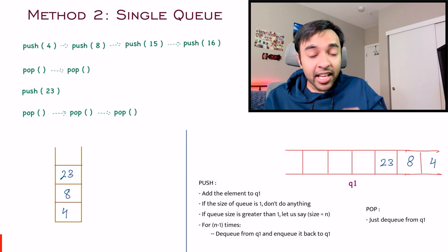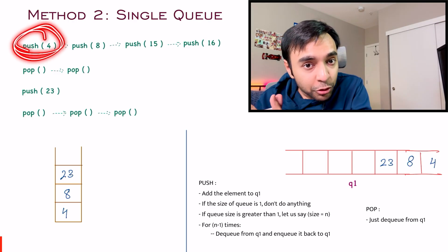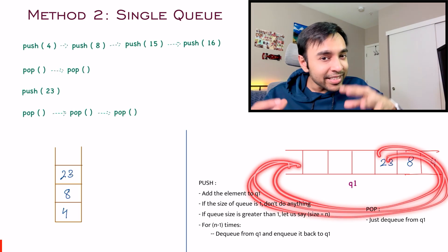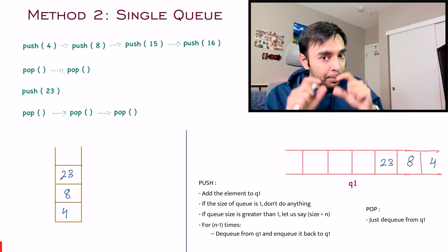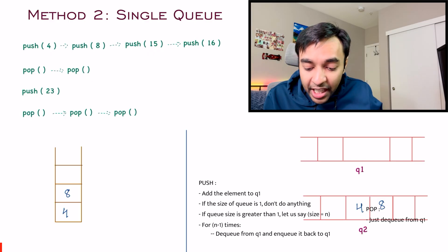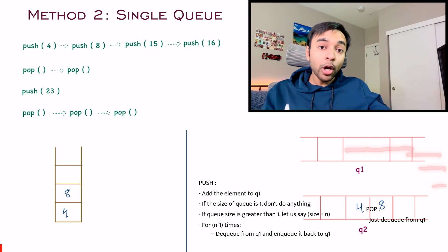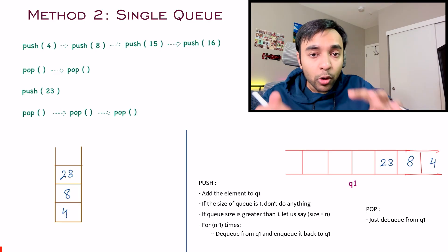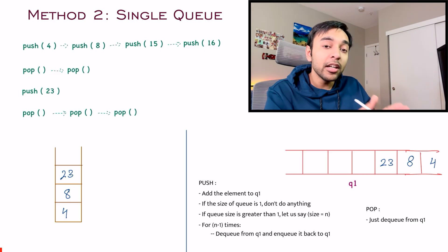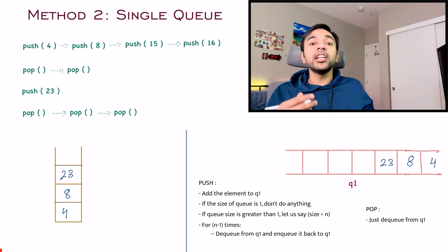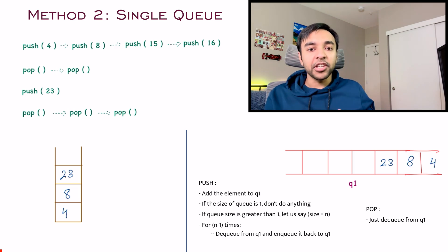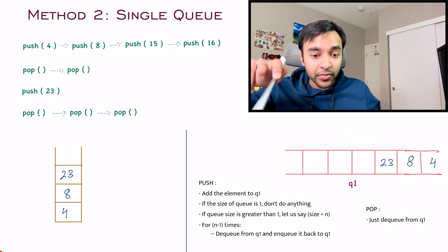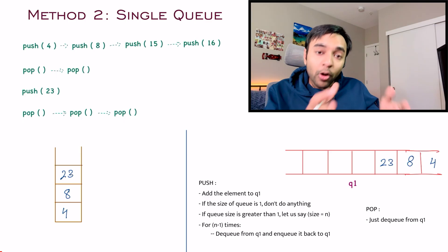One thing to notice is that when using a single queue, the push operation is very resource intensive — for every push, you keep rotating elements, which can take a lot of time. In the two-queue approach, the push operation was not heavy; you just add to your queue. Only when you pop do you use the secondary queue. So if you have a lot of push operations, it's better to use a secondary queue. But if you'll do a lot of pop operations, the single-queue approach is helpful since popping doesn't require recursive iterations.